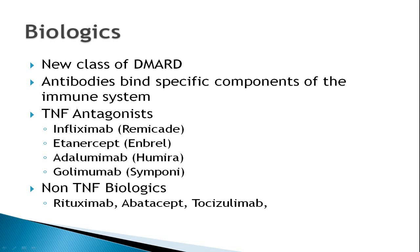Many of you have heard the term biologics. Biologics are the newest class of DMARDs — they've been on the market for around 10 years. Essentially they all work through some form of antibody or similar system that binds very specific components of the immune system, and by doing that it down-regulates the inflammation causing the arthritis. The most common and oldest type of biologic is called a TNF antagonist, and there are currently five on the market. There are also non-TNF biologics available that work through different mechanisms.